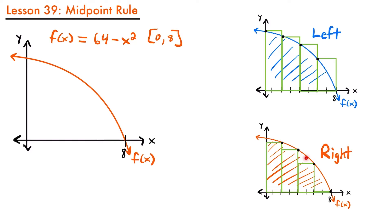For our second graph, we used right endpoints of the rectangles by lining up the upper right corner with our function. You can see how this approximation was an overestimation because it's including all this extra area above the curve, and that when we used right endpoints it was an underestimation because we weren't including some of the area underneath the function. This might lead one to ask: what would happen if we use the middle of the rectangle rather than a corner? That is what the midpoint rule does.